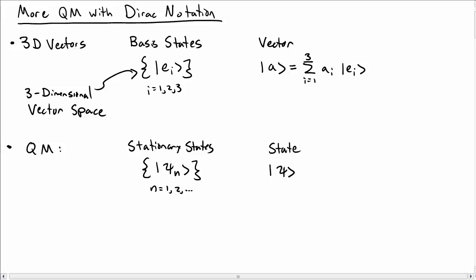And then we write an arbitrary state, capital psi. We can write that in terms of the stationary states, the sum over n, cn psi n. But notice that there is an infinite number of stationary states in general. And so we would say that this is an infinite dimensional vector space. In fact, we give a name to that, we call that a Hilbert space.